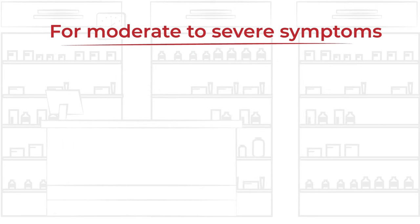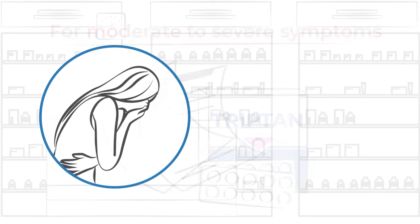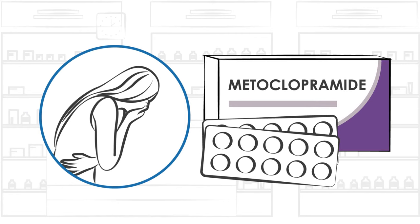For moderate to severe symptoms, a prescribed oral triptan may be recommended. Due to the high prevalence of nausea during menstrual migraine, anti-nausea medications such as metoclopramide can be helpful.